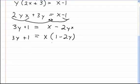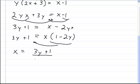Now we're going to bring this over to that side. So then you get x equals (3y plus 1) divided by (1 minus 2y).